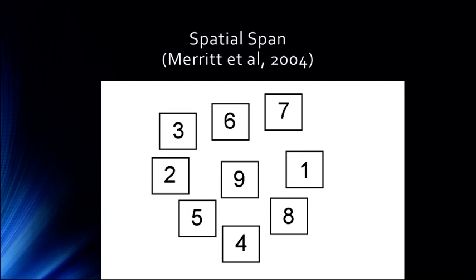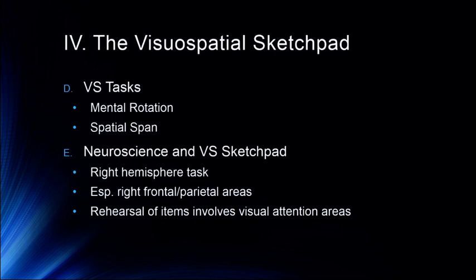What you likely found yourself doing is directing your visual attention — if not even moving your eyes a bit — from one location to the other. It's a little bit like the game Simon. Neuroscience research shows you can actually see that this kind of rehearsal occurs in the right hemisphere, and that seems to involve those visual attention areas that are part of the dorsal stream we talked about previously. The visual spatial sketchpad seems to be primarily interacting with those visual attention areas where attention can be directed to different areas.